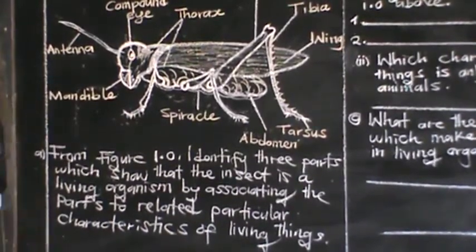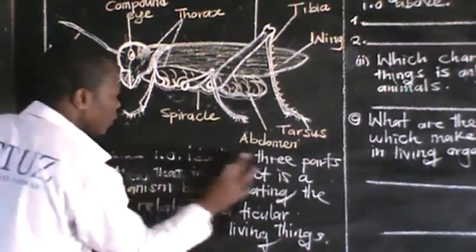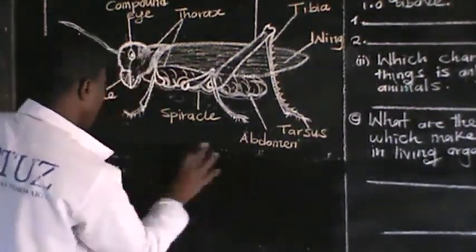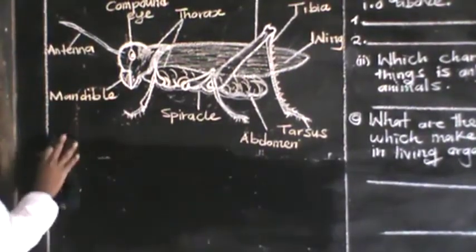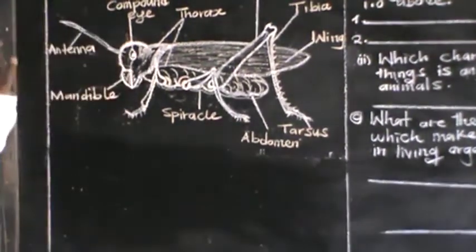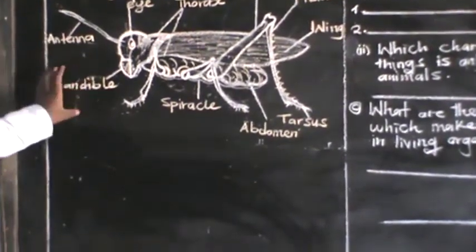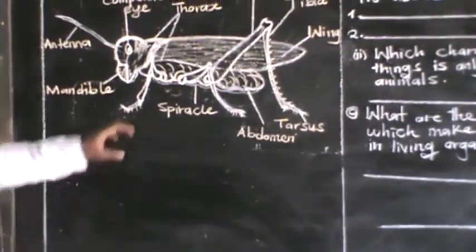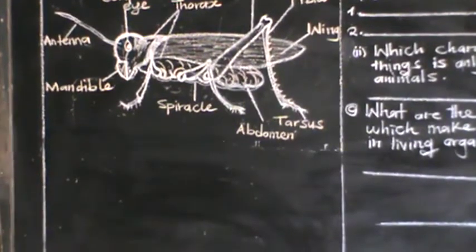A part with its corresponding characteristic of a living organism. Now we have got a lot of characteristics of living organisms — we have got movement, we have got respiration, we have got sensitivity, we have got feeding, we have got reproduction, we have got excretion. Now out of all those, they want us to identify three parts from this insect and the corresponding characteristic which shows that this insect is a living organism.